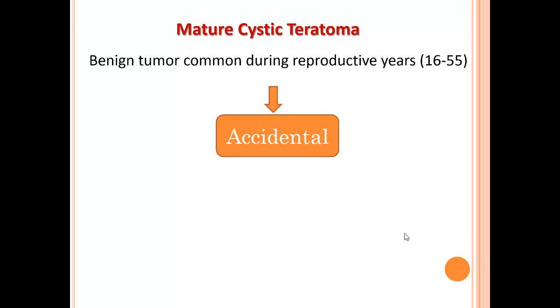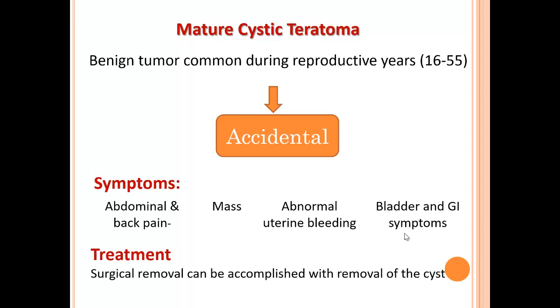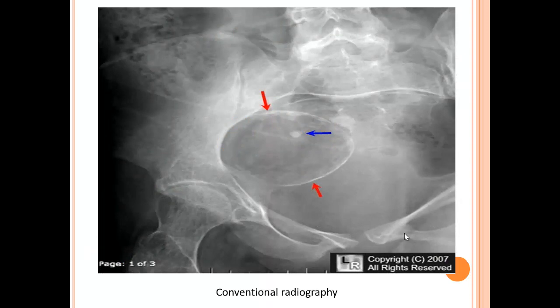Presentation is usually accidental — sometimes when you do a pelvic ultrasound you accidentally discover a teratoma. But sometimes the patient comes with abdominal and back pain, a palpable mass, abnormal uterine bleeding because sometimes they secrete hormones, and bladder or GIT symptoms if it is a very large teratoma. If there is a complaint from this teratoma it must be removed surgically. It can also be accidentally discovered on conventional radiography — plain X-ray showing calcification in the wall of the cyst and a tooth-like appearance inside, which is the typical appearance of mature cystic teratoma on plain film. If the patient presents with abdominal pain or retention, plain film is often done first to exclude, for example, urinary stone.